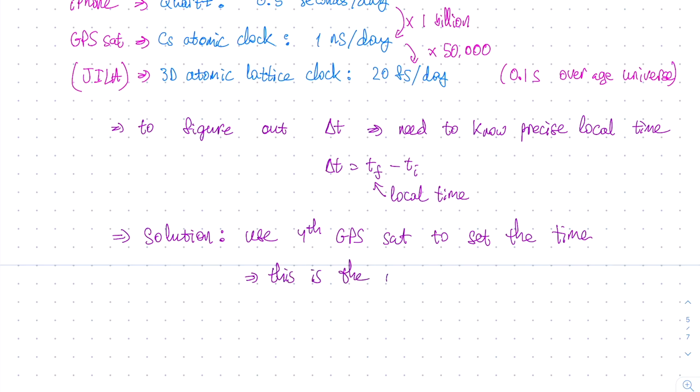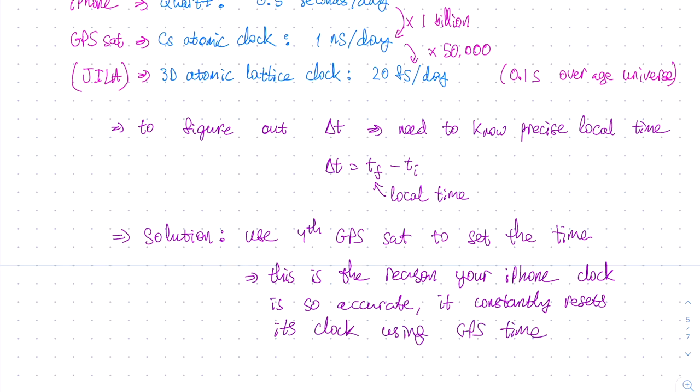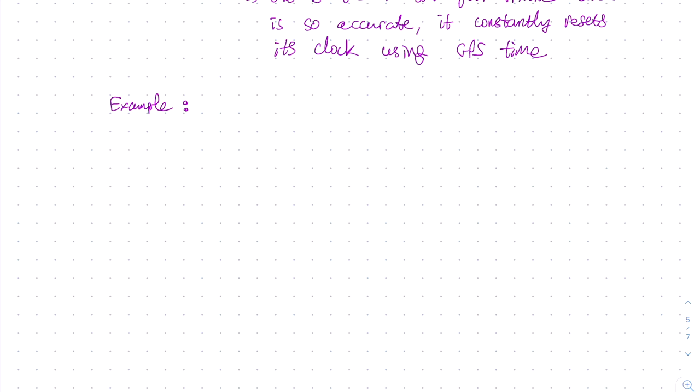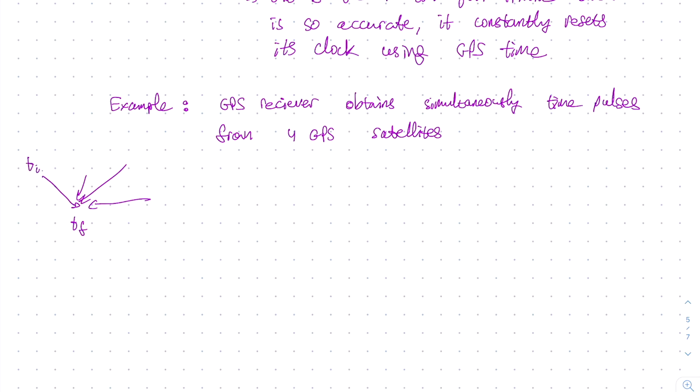The solution to this conundrum is that in addition to the three GPS satellites that we use to fix our position, we use a fourth GPS satellite to set the local time. By the way, this is precisely the reason why your iPhone has such an accurate clock. It is constantly resetting its time using the GPS time that it is receiving through its GPS receiver. Now let's take a look at an example of how this all works. Suppose our GPS receiver obtains simultaneously pulses from four different GPS satellites. So sketching this situation, here are the four initial times, t initial 1, t initial 2, t initial 3, and t initial 4.